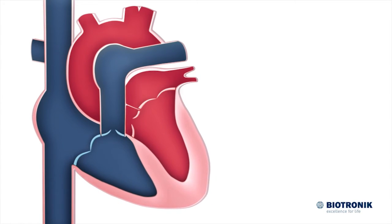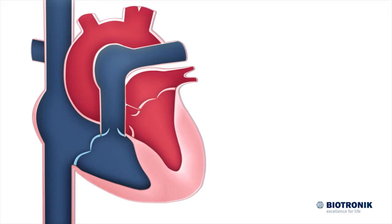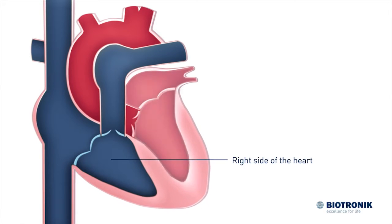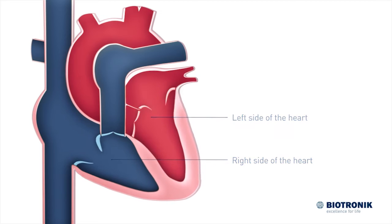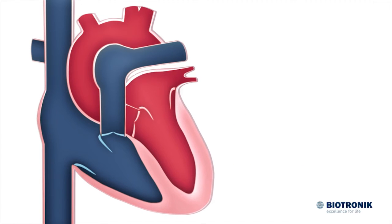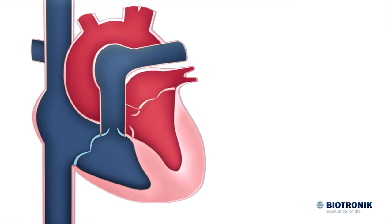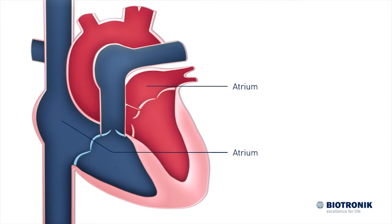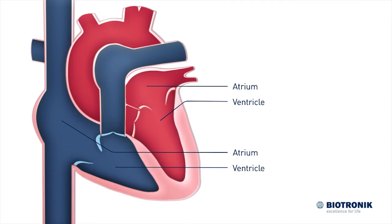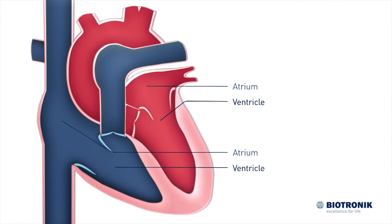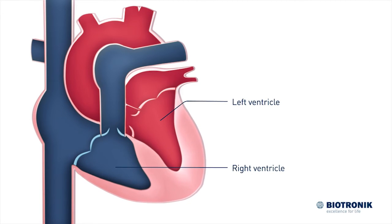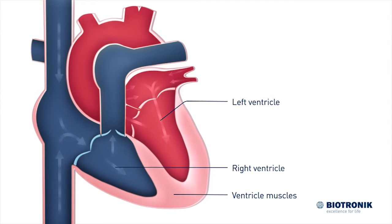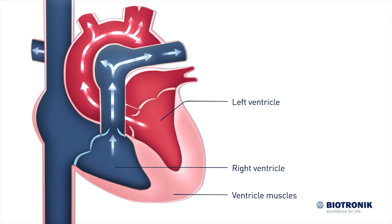The heart is divided into two sides, labelled right and left from the perspective opposite the viewer. The right and left sides of the heart each have two chambers: the atrium and the ventricle. The ventricles have powerful muscles that pump the blood through the circulatory system.